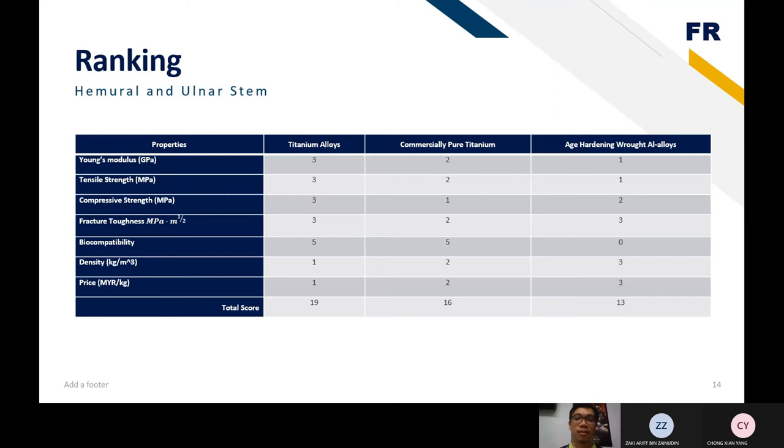In conclusion, we get the ranking for the humeral and ulnar stem. Remember that humeral and ulnar stem is for metal only, and bearing and cup joints are for ceramics only. So in the humeral and ulnar stem parts, titanium alloy is the best material with the highest total score of 19. But because of the price of titanium alloy is too expensive, thus the second best ranking is the commercially pure titanium. So we decided the commercially pure titanium to be the mechanical part for humeral and ulnar stem.